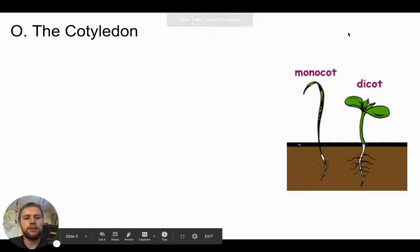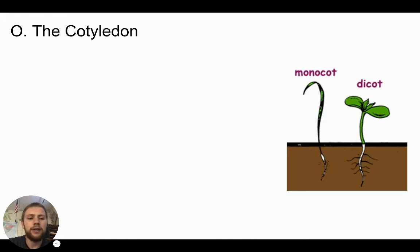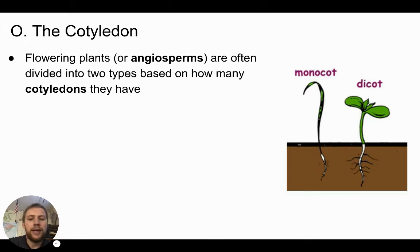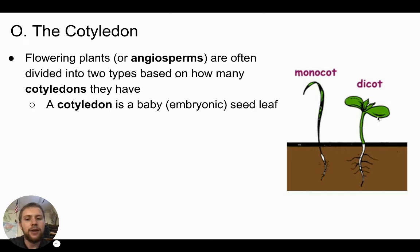The cotyledon — also pronounced 'cotyledon' — is a way that we can group angiosperms, or flowering plants, which we learned about as the most recently evolved group in our plant evolution lecture. We can categorize flowering plants into two categories based on how many cotyledons they have. A cotyledon is a baby or embryonic seed leaf — the first leaves to develop in a growing seed. After the seed germinates, sprouts, and grows up toward light, those first baby seed leaves are called the cotyledons.